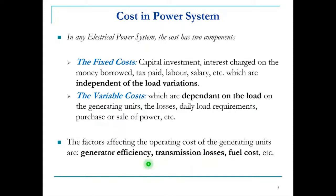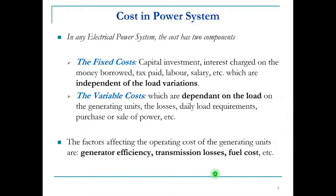If there are n generators in a system, each will have different generating efficiency, and transmission losses between lines and fuel costs may vary by location. In order to achieve a combined optimal effect, the operating cost has to be minimized — that is the economic load dispatch problem, where economical aspects must be taken into account.